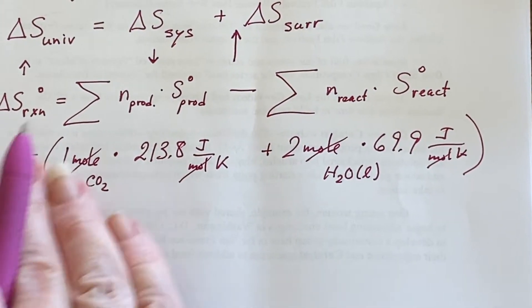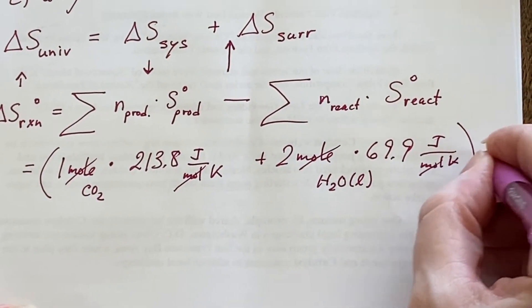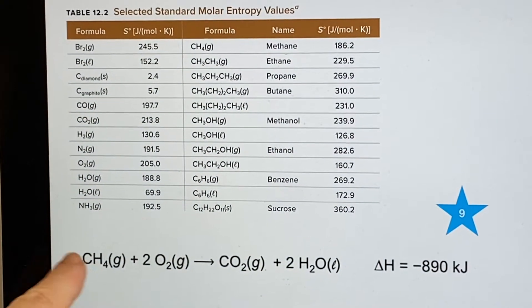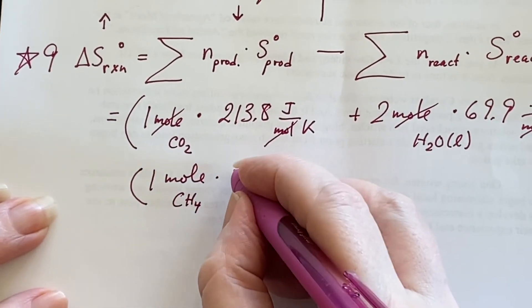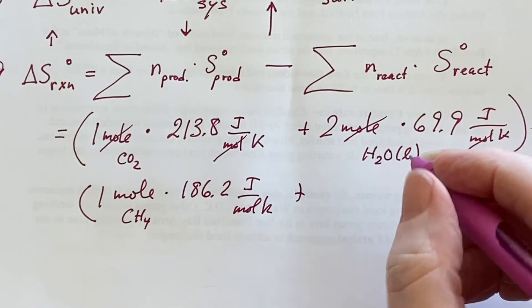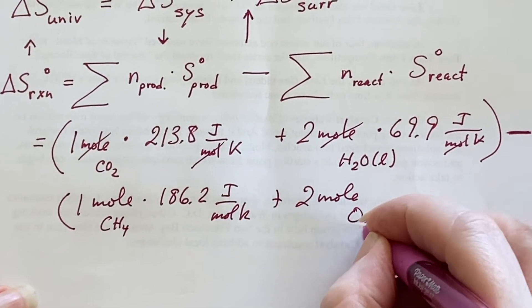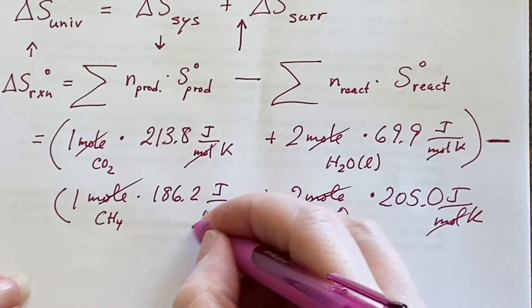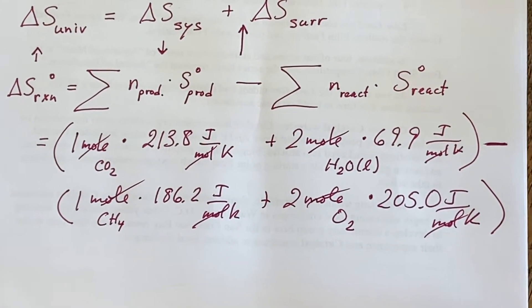There we have the products. We need to subtract the reactants: the methane 186.2, one mole of it, CH₄, and that's 186.2. We have two of these oxygens, so two moles of oxygen O₂ as a gas, 205.0. Make sure we get all our moles canceled out, and then it's time to just hit the calculator.